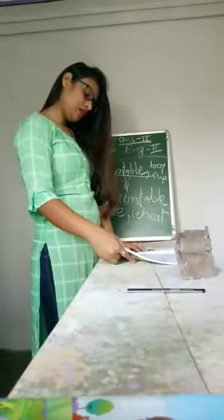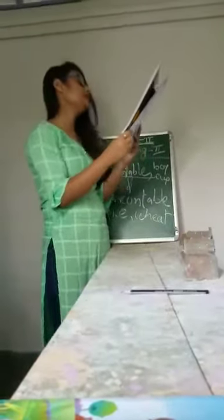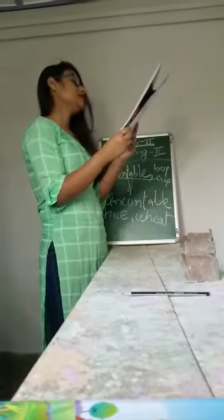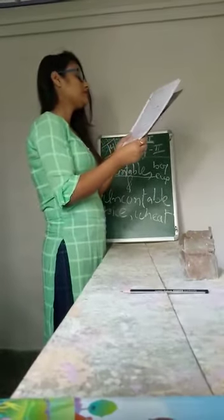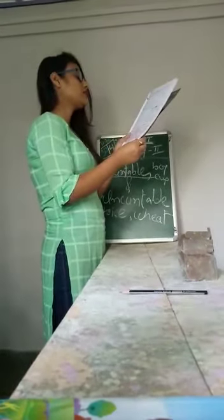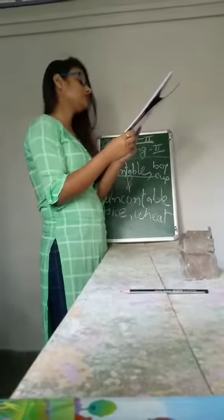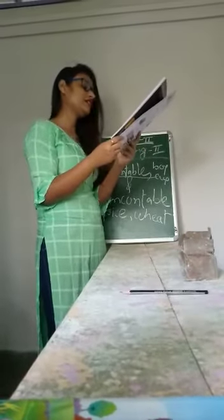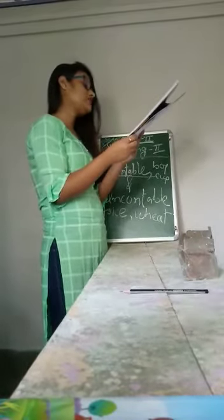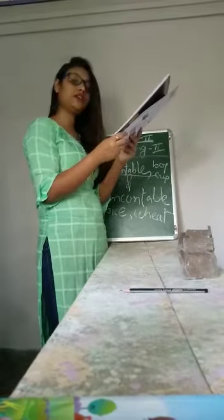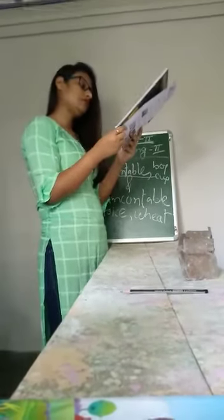In page 11 there are some examples. Number one: boy, cup, pencil — things that we can count. Then there is number two, uncountable noun examples: rice, wheat, wood, cloth.